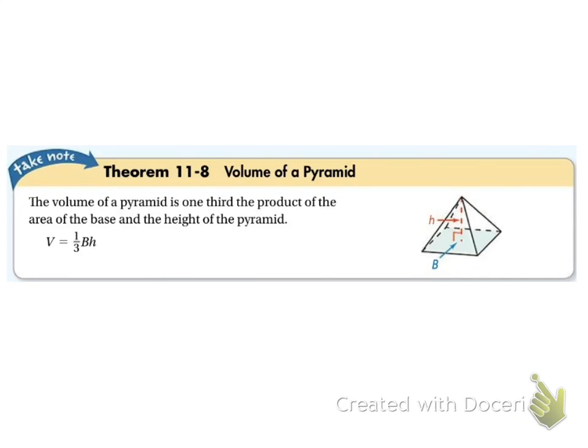This is 11.5 of geometry. We're going to look at the volume of pyramids and the volume of cones. The volume of a pyramid is one-third base times height, where that B, remember it's a capital B, is the area of the base, and h is our height.